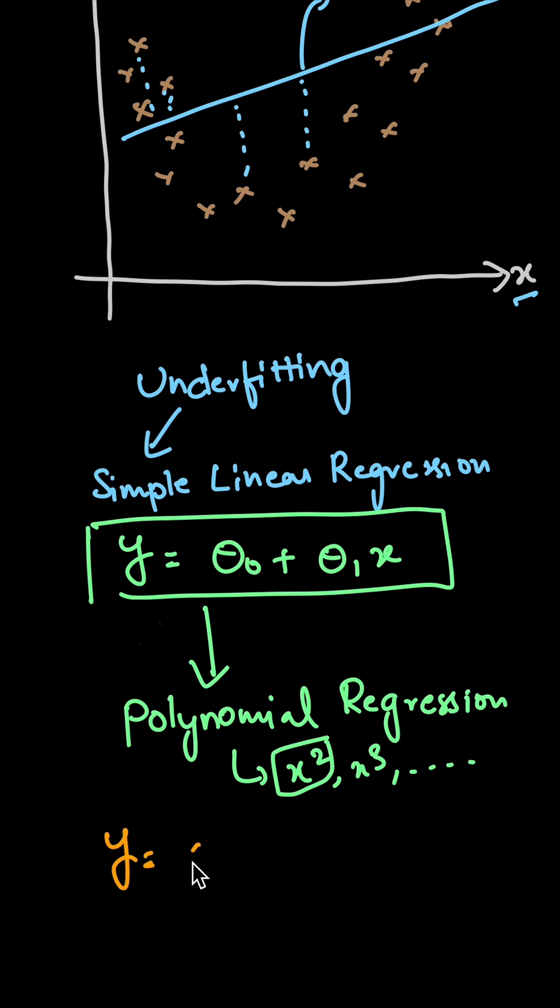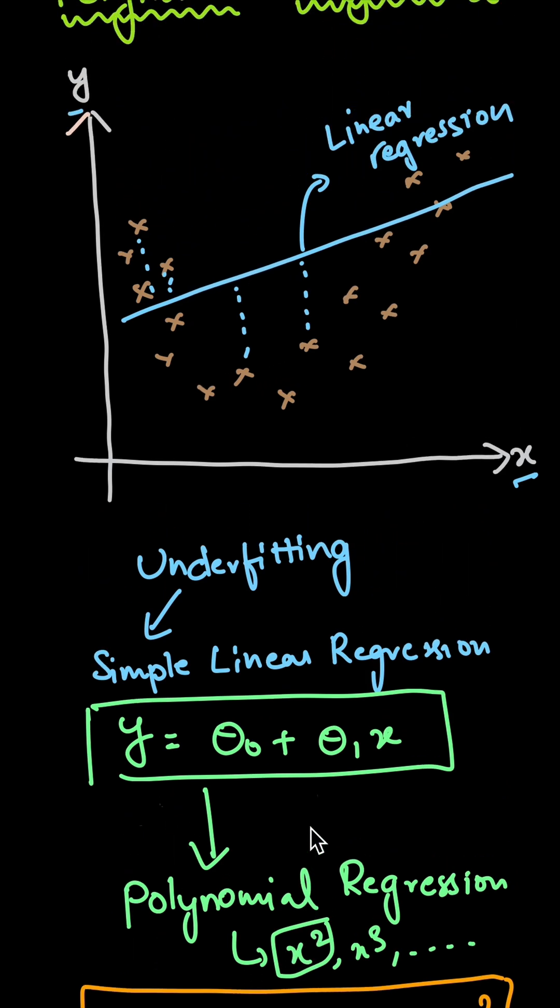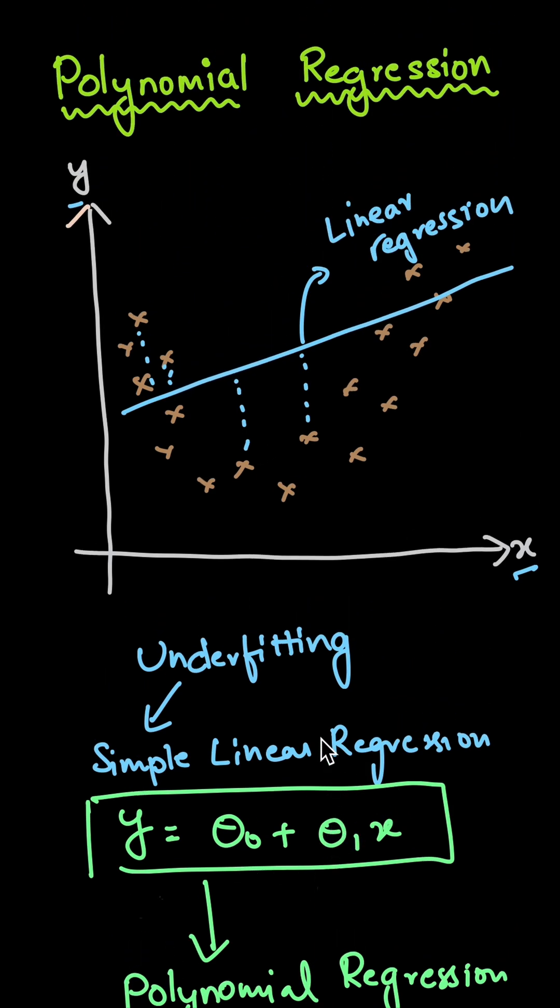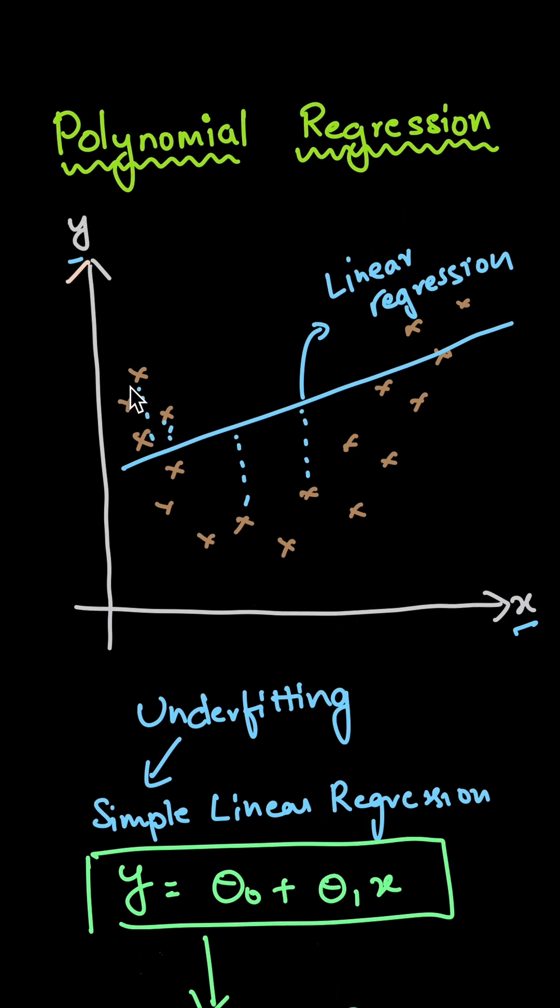Our hypothesis will become something like this: y equal to theta naught plus theta1 into x and theta2 into x square. And if we are trying to fit this particular hypothesis, initially, these theta values will be some random values. And then the training process will adjust the overall theta values. And finally, my hypothesis with polynomial regression will look something like this.